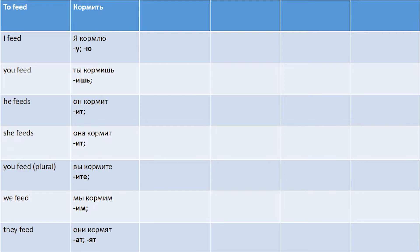The first one is 'to feed' — кормить. So: I feed — Я кормлю. We have the ending -ю. You feed — Ты кормишь. He feeds — Он кормит. She feeds — Она кормит. You feed (plural) — Вы кормите. We feed — Мы кормим, ending -им. And they feed — Они кормят.